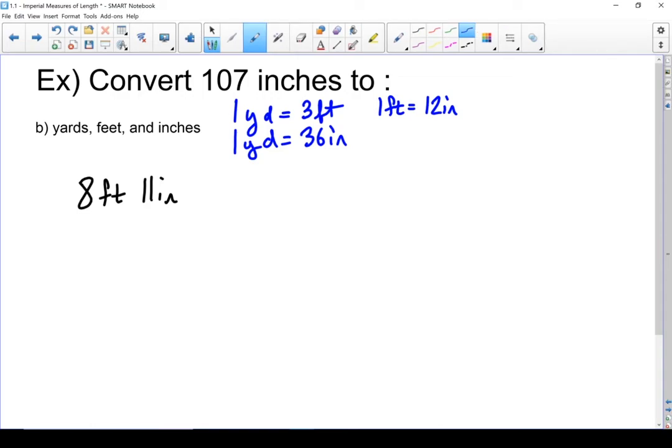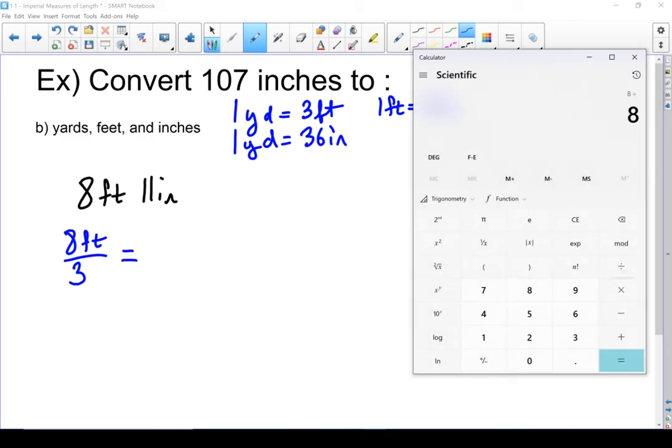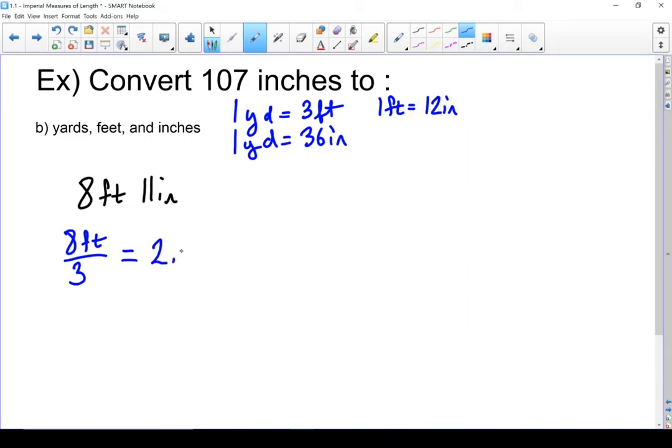How many full yards are in that 8 feet? So if I do 8 feet divided by 3 yards per foot, I end up with 2.6 repeating. So that means I've got 2 full yards. In fact, I can start writing it down. I've got 2 yards, some feet, and 11 inches. Okay, now let's go back and figure out what that remainder is.